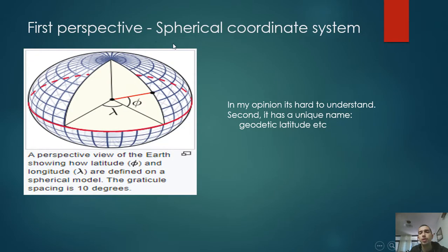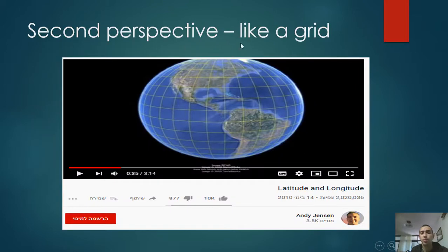First perspective: it's a spherical coordinate system. I won't explain it; in my opinion it's hard to understand. Second, it has unique names, for example geodetic latitude. The second perspective is like a grid, which is commonly used. You see here in the picture the globe which is like a grid.